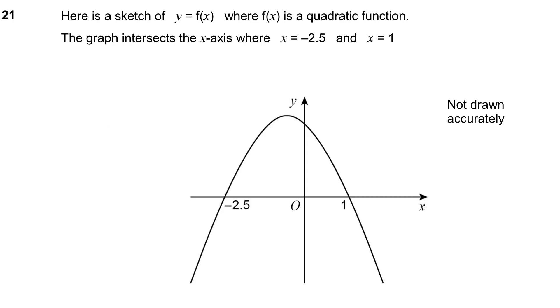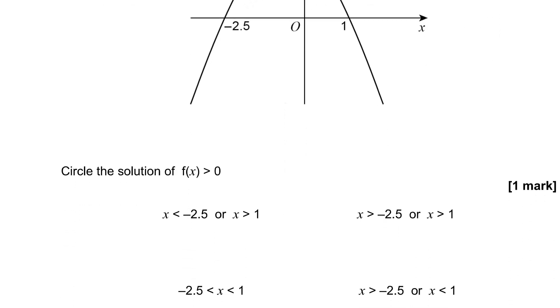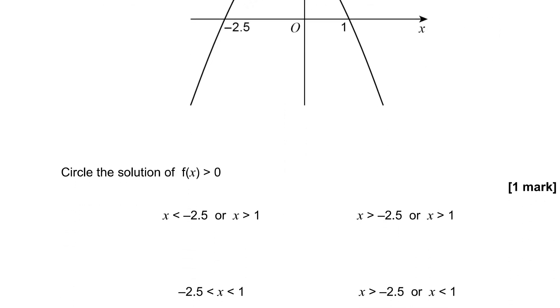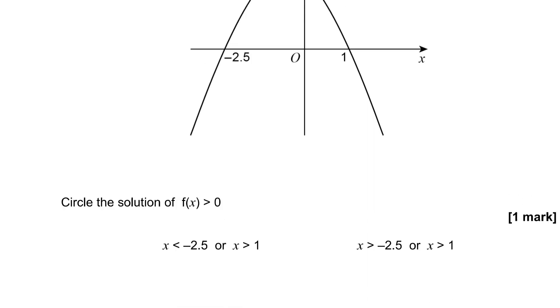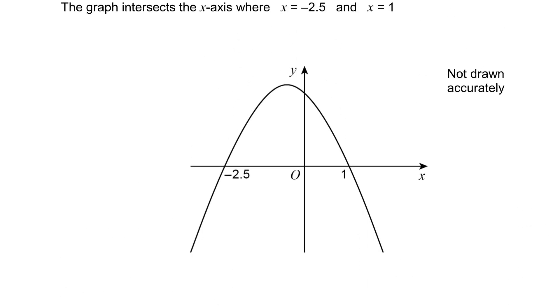Question 21. Here is a sketch of y equals f of x where f of x is a quadratic function and we see that the graph intersects the x-axis at x equals minus 2.5 and x equals 1. And we need to circle the solution for f of x is greater than 0. Well this graph is f of x and it is greater than 0 for the bit where the graph is above 0. Either side of that it's below 0.